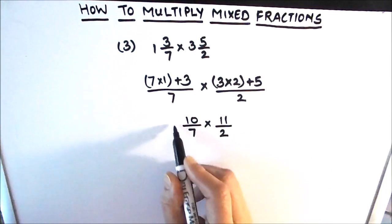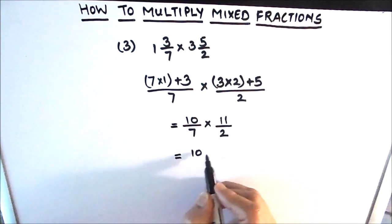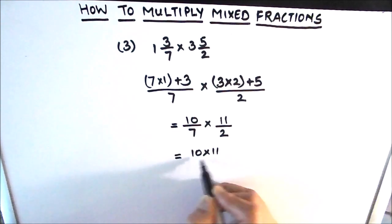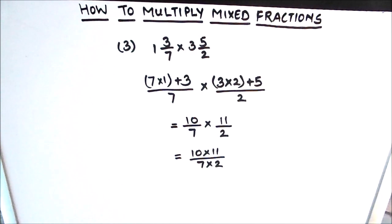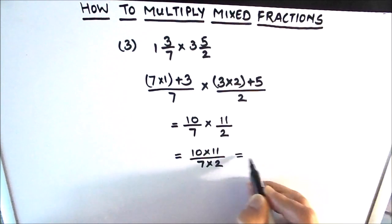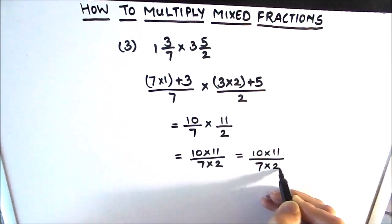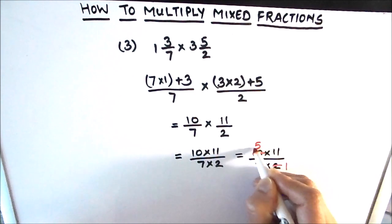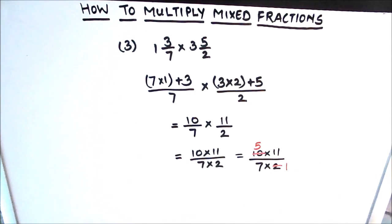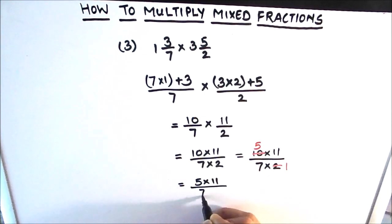We now have two improper fractions, so we multiply the two numerators together and the two denominators together. This is going to be 10 times 11 divided by 7 times 2. Before multiplying, we check whether there is a common factor between the numerator and denominator. We see there is a common factor of 2: 2 times 1 is 2 and 2 times 5 is 10. So we simplify the fraction before multiplying.